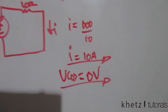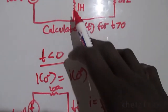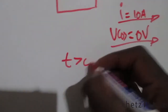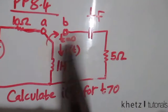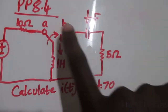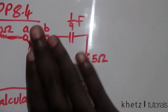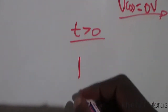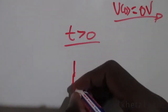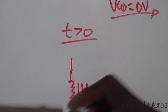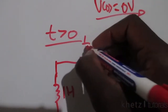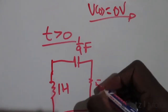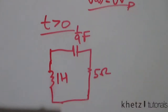Now we move on to time greater than zero. At t=0 the switching action occurs, giving us a new circuit: 1 henry inductor, 1/9 farad capacitor, and 5 ohms resistor. As you can see, this is a source-free RLC circuit and we'll deal with it accordingly.